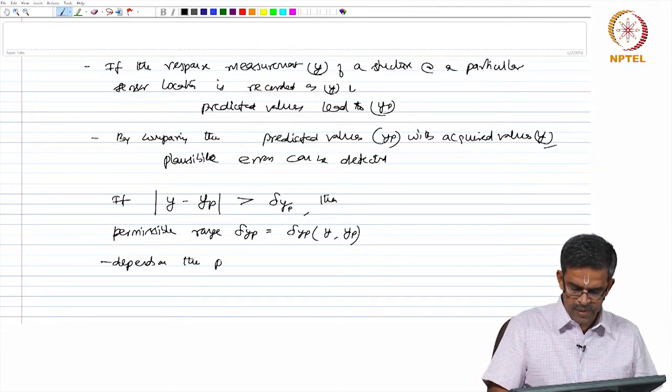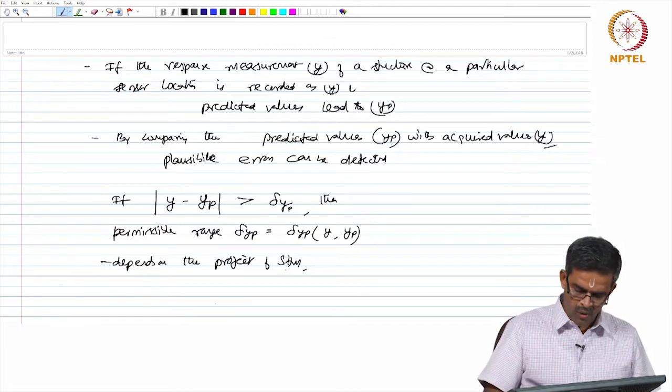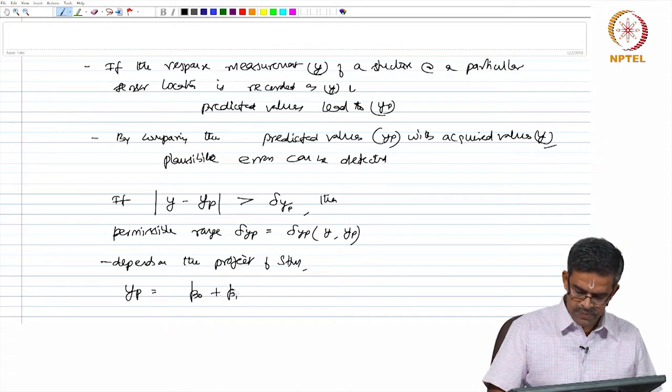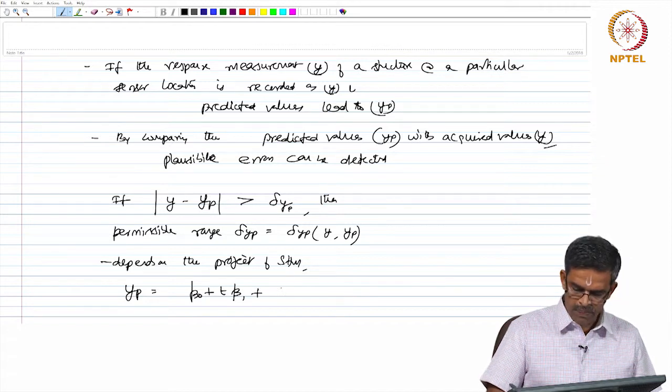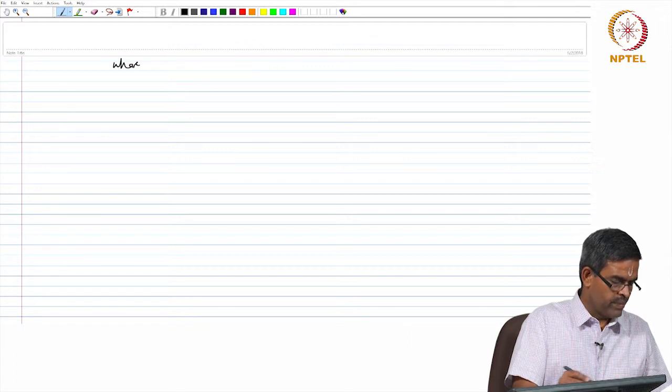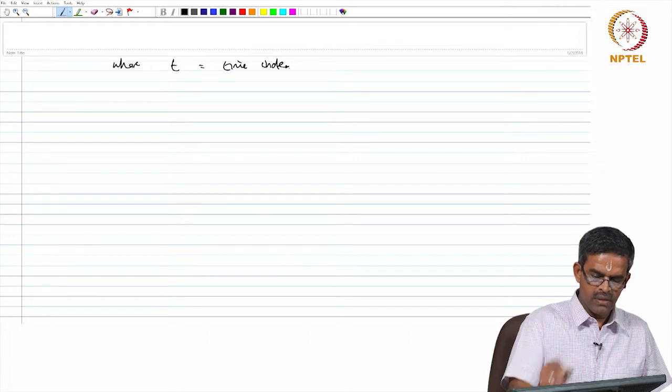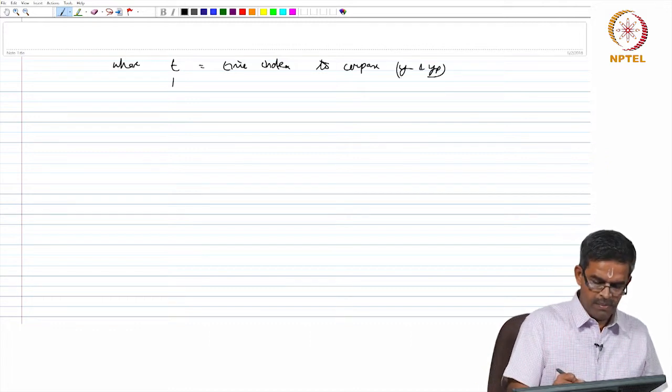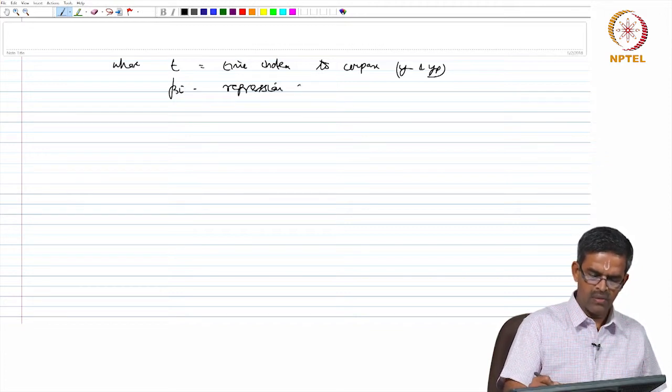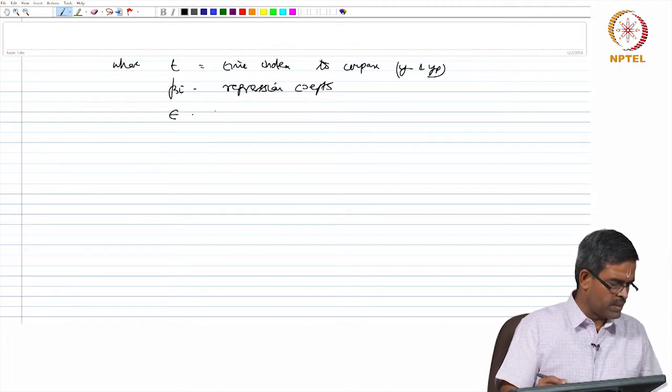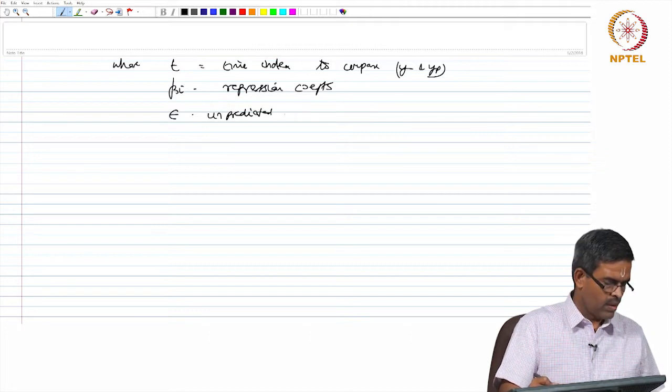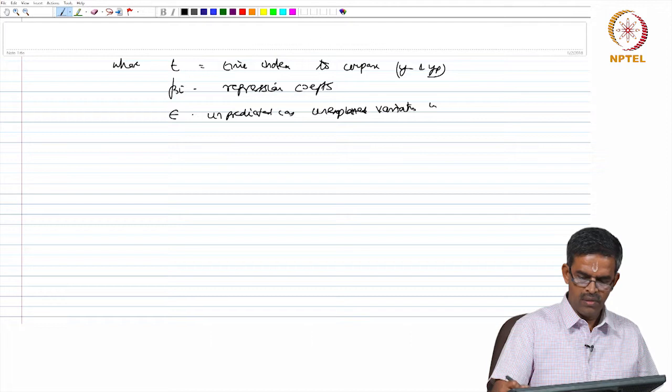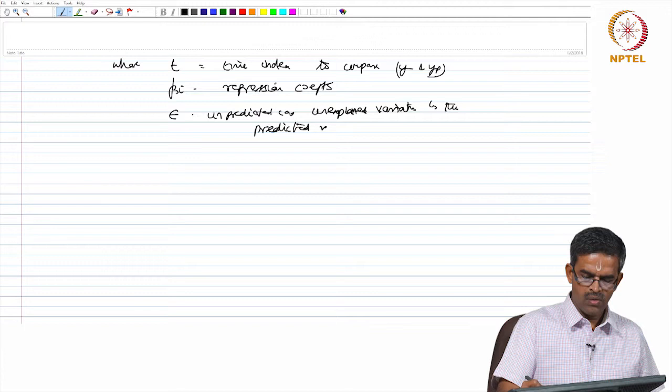The predicted value can be some error function of beta 0, beta 1, plus some error function, where t is the time index used to compare Y and Yp. Beta i are the regression function coefficients, and epsilon represents the unpredicted or unexplained variation in the predicted value Yp.